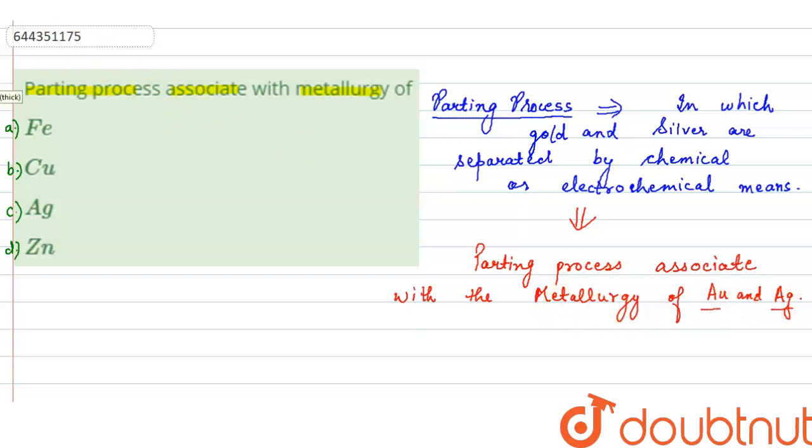Now, if we look at the options, in option A, iron is given, so this is wrong. In option B, copper is given, this is wrong. In option C, silver is given, so this will be the correct option.